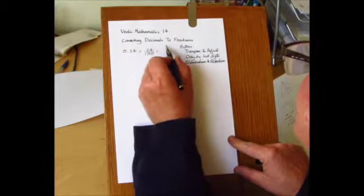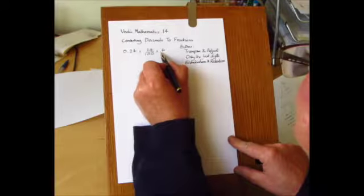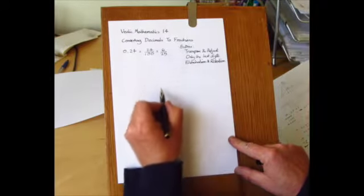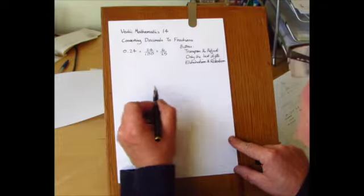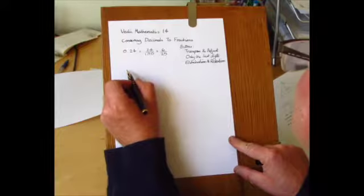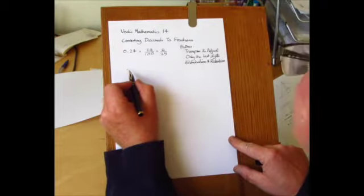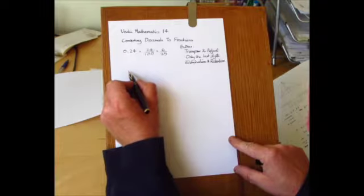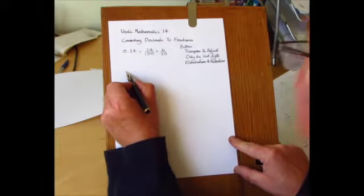Here we can divide top and bottom by 4 to give 6 over 25. But now we'll look at how to convert recurring decimals into fractions, and this appears in most of the GCSE syllabuses and work schemes.